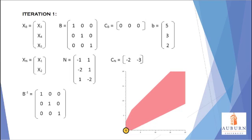The CB and CN matrices are formed from the original C matrix, just like the B and N matrices. The CB and CN matrices are formed from the cost coefficients that are associated with the decision variables labeled in each XB and XN. The inverse of the B matrix was also calculated to use in later steps.